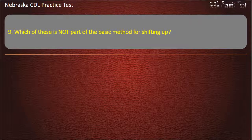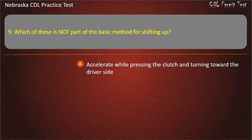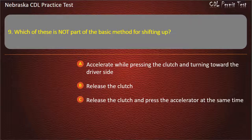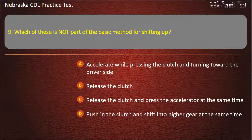Question 9. Which of these is not part of the basic method for shifting up? Accelerate while pressing the clutch and turning toward the driver's side, release the clutch, release the clutch and press the accelerator at the same time, push in the clutch and shift into higher gear at the same time. Answer: Accelerate while pressing the clutch and turning toward the driver's side.